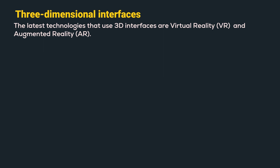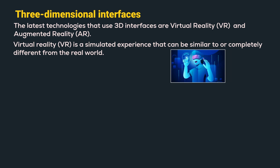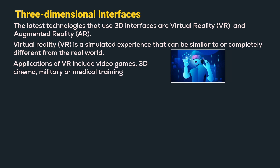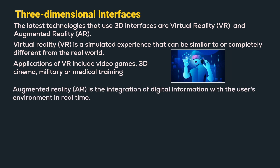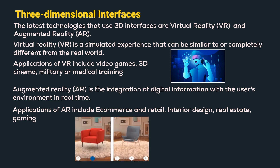The latest technologies that use 3D interfaces are virtual reality and augmented reality. Virtual reality or VR is a simulated experience that can be similar to or completely different from the real world. A VR experience can be created using different VR devices. The applications of VR include video games, 3D cinema, and military or medical training. Augmented reality or AR is the integration of digital information with the user's environment in real time. Applications of AR include e-commerce and retail, where we can see how a product would look on online shopping, interior design, real estate and gaming. Here is an example of AR in interior design where we can see how a piece of furniture will look in our house.